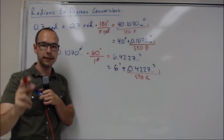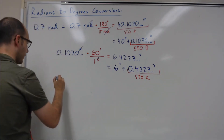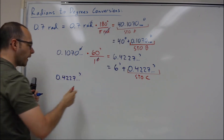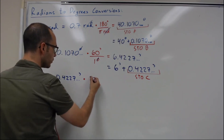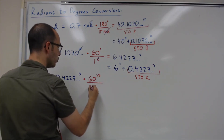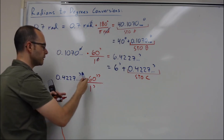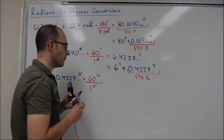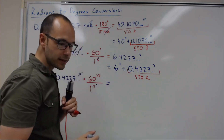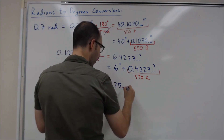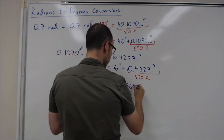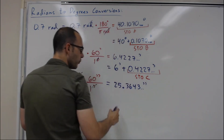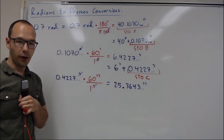I take that 0.4227... minutes and multiply it by the conversion factor of 60 seconds per one minute. This cancels out the minutes unit, leaving only seconds. So it's going to be 25.3643... seconds. Usually we do not keep the decimal part of the seconds.